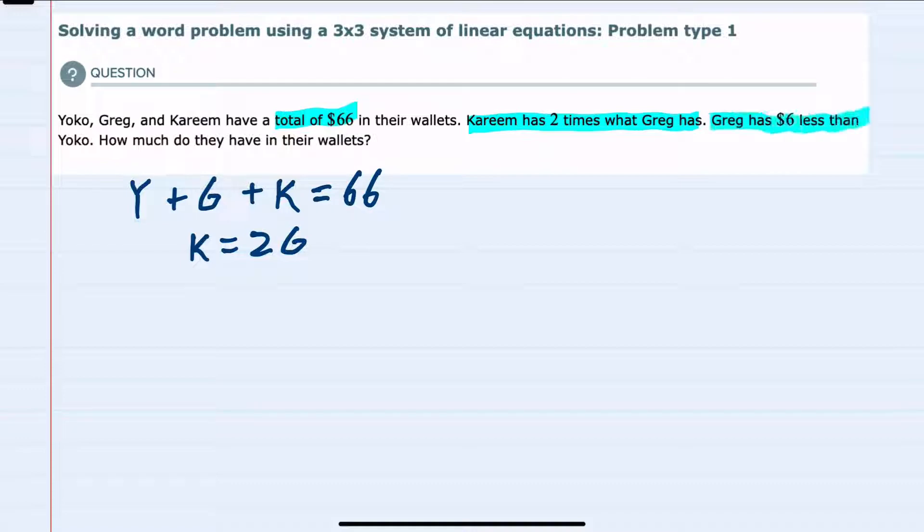And then the last part: Greg has $6 less than Yoko. So if we took Yoko's value, Y, we would subtract 6 from that to get Greg's amount in his wallet. So we have three variables here—Y, G, and K—but we have three equations. So this is a 3x3 system of linear equations.